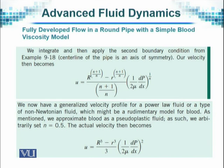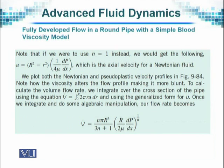Trying to integrate the last equation that we arrived at for this problem, we find that the velocity component U turns out to be equal to this value. This is a general velocity profile obtained, in which the variation of pressure is of order 2 and the pressure gradient is of order 2, while the radius is of order 3.